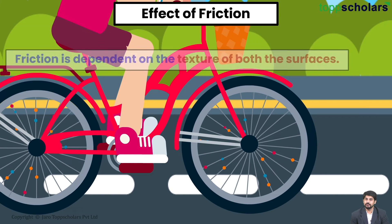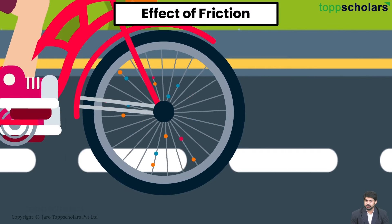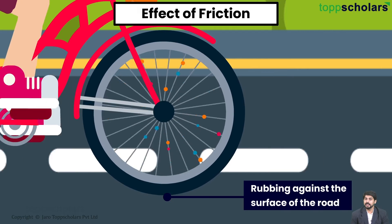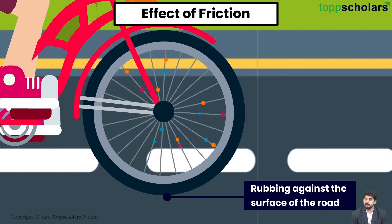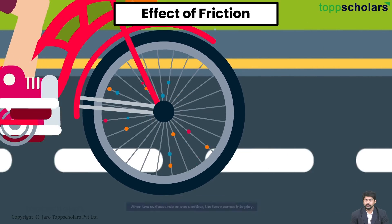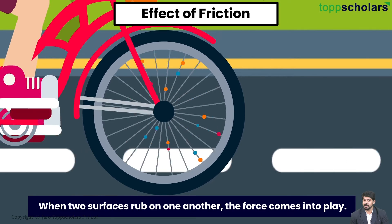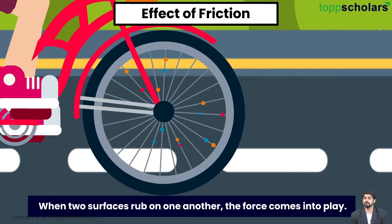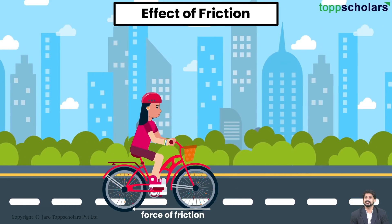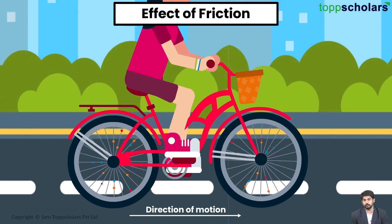This friction is dependent on the texture of both the surfaces. While in motion, the tires of the bicycle are rubbing against the surface of the road. When two surfaces rub on one another, the force comes into play. This force acts in the direction opposite to the direction of motion.